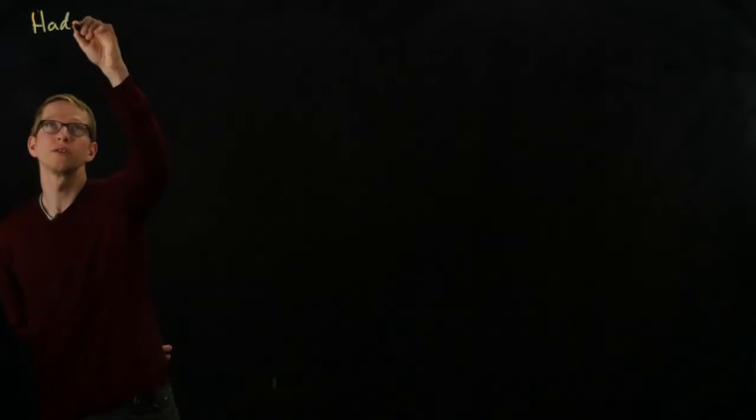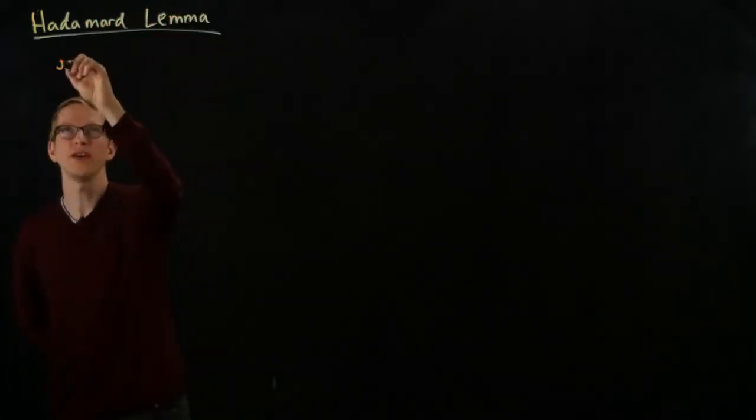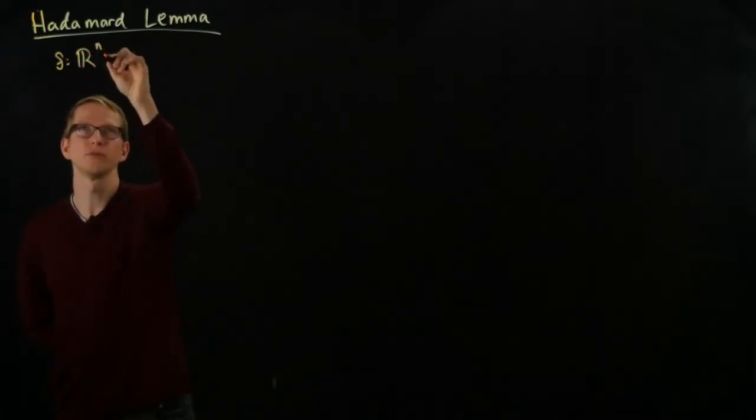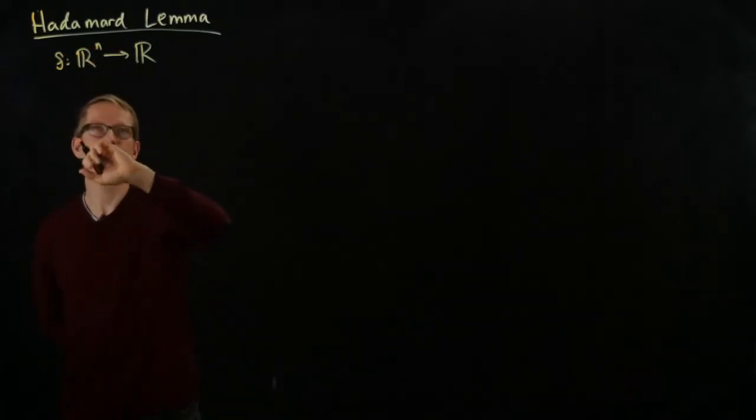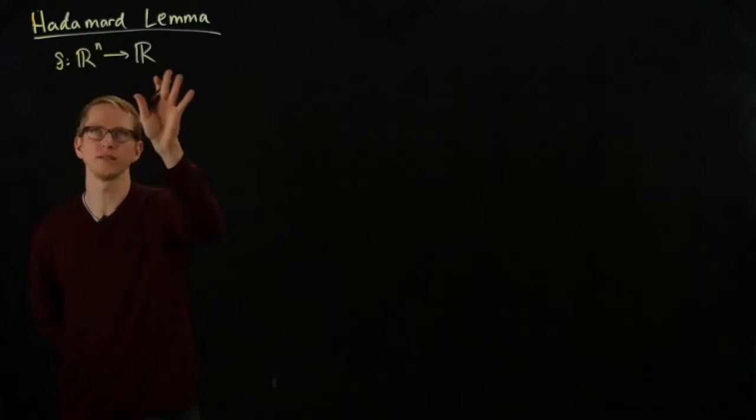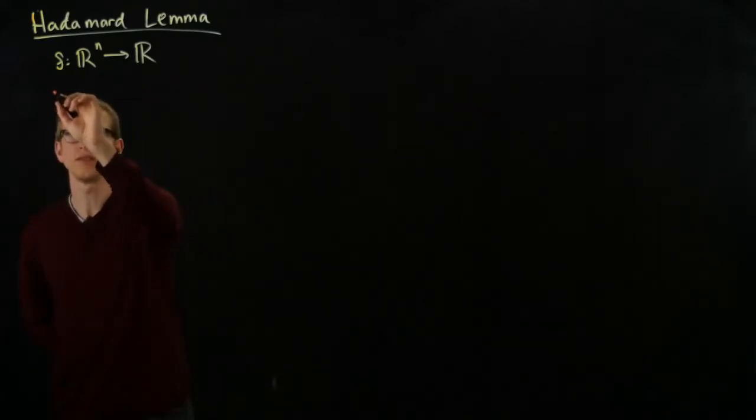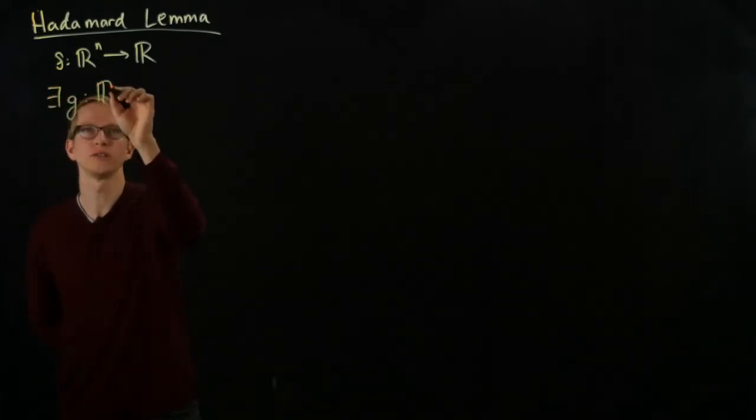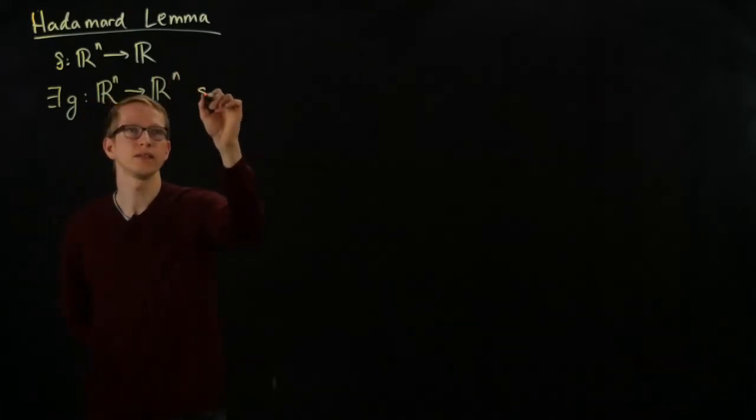For this, we need a very important theorem, which is called Hadamard lemma. If f is a function that's differentiable from R^n to R, differentiable everywhere, in fact, let's just say it's smooth just to make the statement simple, then there exists a function from R^n to R^n such that, and I'll phrase this in two ways.